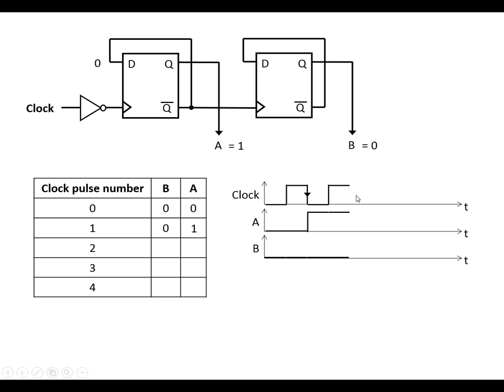Next clock pulse coming in. So it's the falling edge here. It causes D to get copied to Q. So A is going to go to 0. And it means that Q bar is going to go to 1. But that's gone from 0 to 1, which is the clock signal for this one. So D gets copied to Q. And what's going to happen is B changes state.